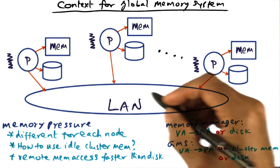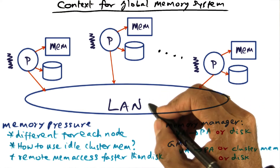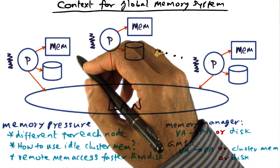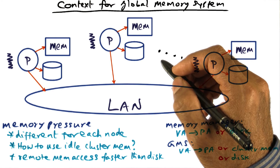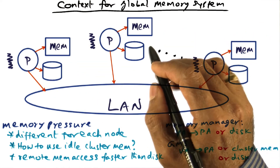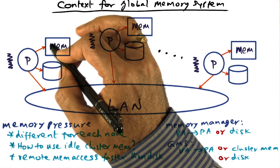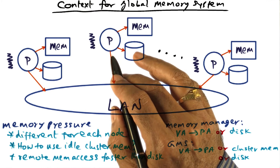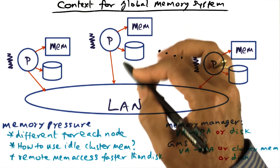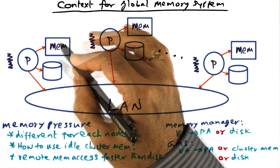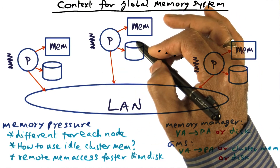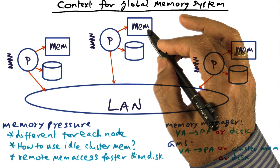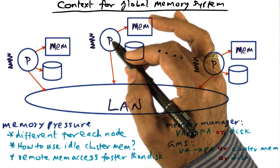GMS trades network communication for disk I/O, and this is done only for reads — reading pages across the network. GMS does not get in the way of writing to the disk. The disk always has a copy of all the pages. The only pages that can reside in cluster memories are clean pages that have been paged out. Dirty copies of pages must still be written to the disk, just as in a regular computer system. GMS does not add new concerns about failures: even if a node crashes, it only loses clean copies of pages, which are also on the disk. The remote memories of the cluster simply serve as yet another level in the memory hierarchy.